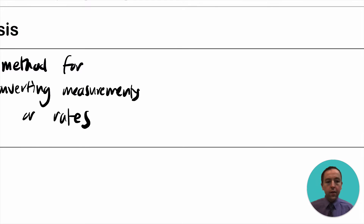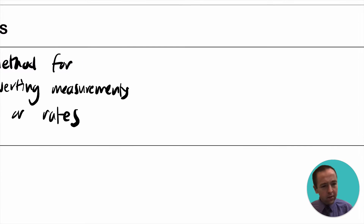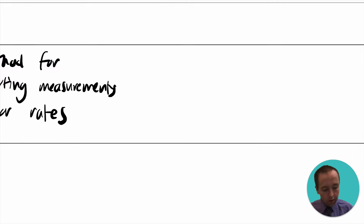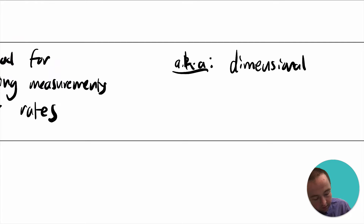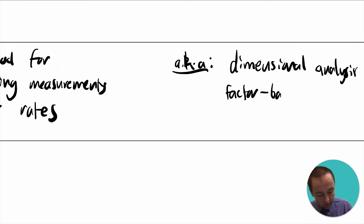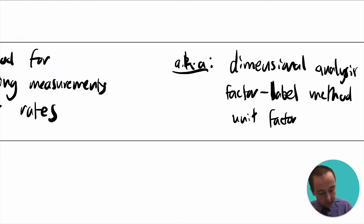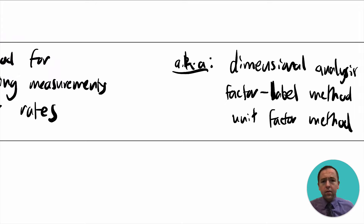Sometimes people give other names to unit analysis. Also known as — probably more commonly referred to as — dimensional analysis. And sometimes people will also call this the factor label method, or even the unit factor method. It's very commonly used not only in math but also in lots of science applications.